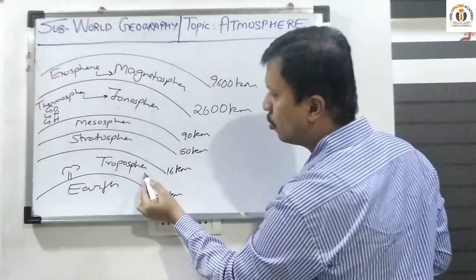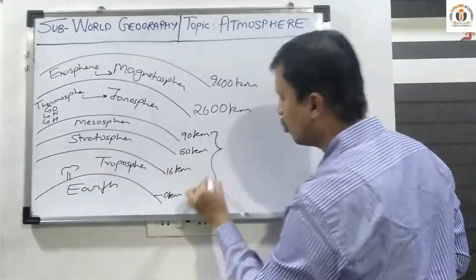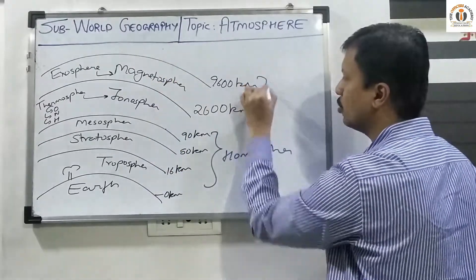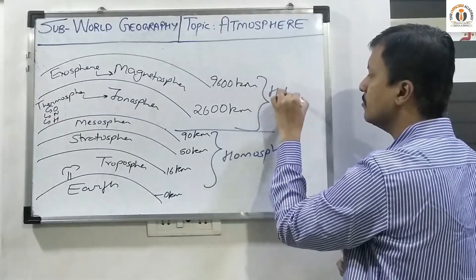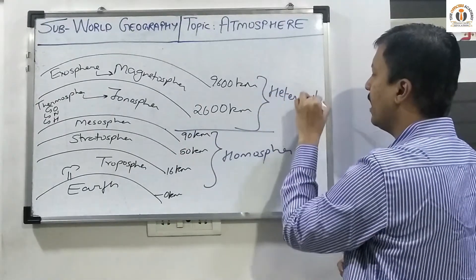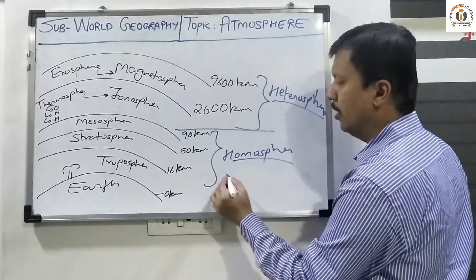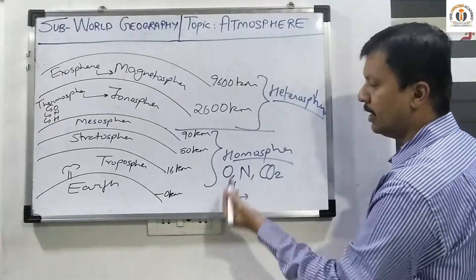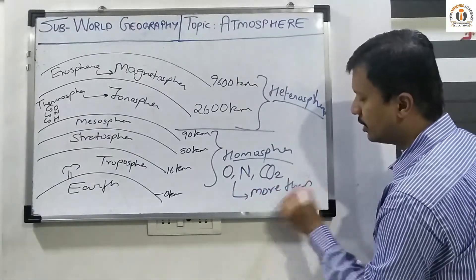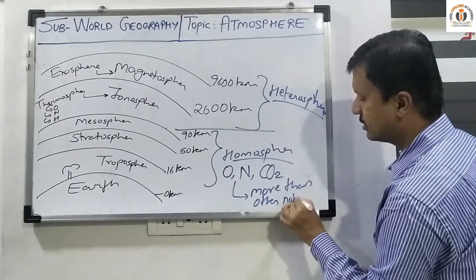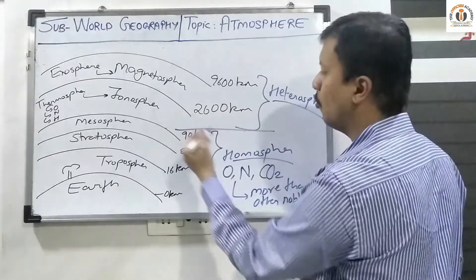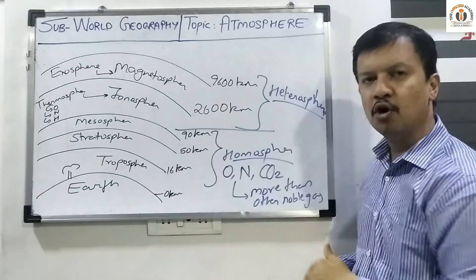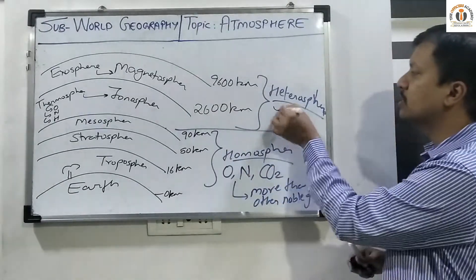These layers are classified into two types. Troposphere, stratosphere, and mesosphere together are called the homosphere. From the mesosphere up to the magnetosphere, the layers are termed the heterosphere. Within the homosphere, oxygen, nitrogen, and carbon dioxide are present in greater quantities than noble gases. As we travel above into the heterosphere, the amount of noble gases keeps on increasing compared to oxygen, nitrogen, and carbon dioxide.